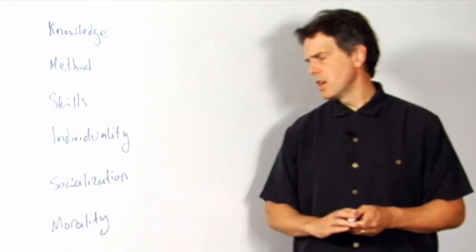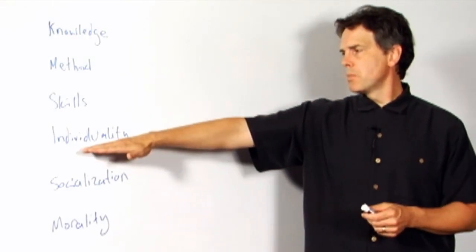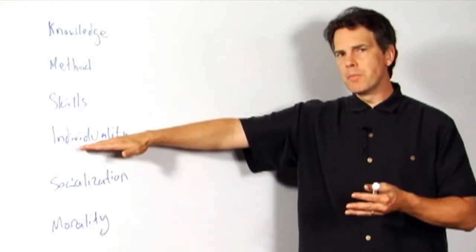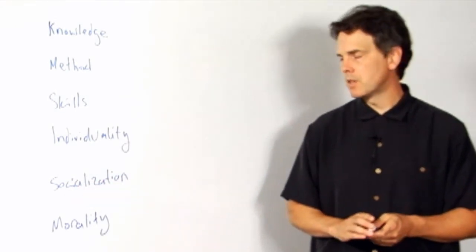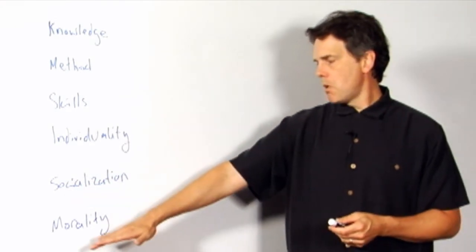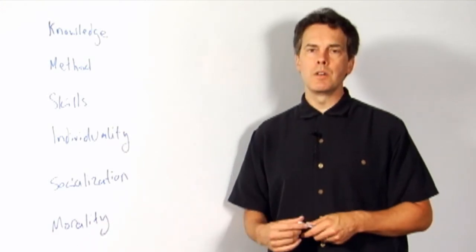Morality is another important one here. Obviously, when we mention individuality, there's a kind of morality that's built into that. When we mention socialization, there's a kind of morality that's built into that. But it's also possible to abstract out issues of morality,